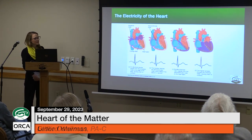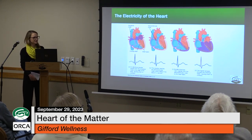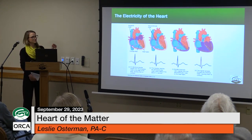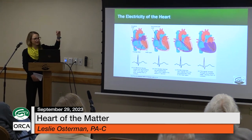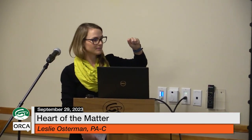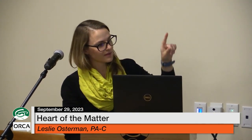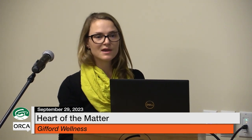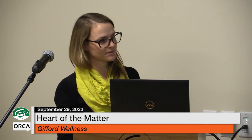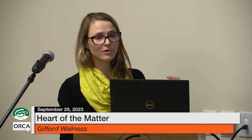We can see if electricity is moving normally by looking at an EKG or electrocardiogram. You'll see four beats of an EKG — that first little bump is called the P wave, showing the electricity moving from the top chamber, the atria, as it depolarizes. The next blip is the QRS complex, which is the electricity moving through the bottom chambers, the ventricles. Lastly, you have the T wave, which is repolarization — the heart relaxing and getting ready for another heartbeat.